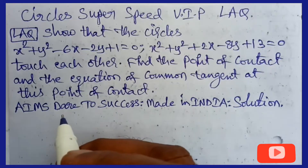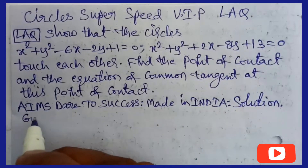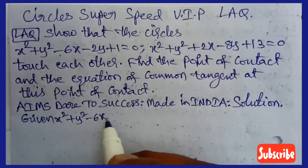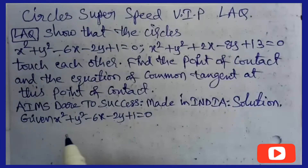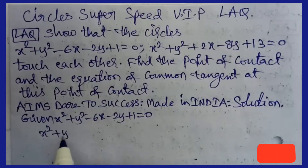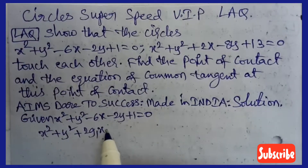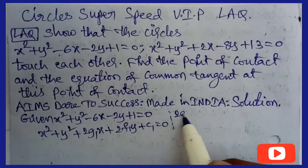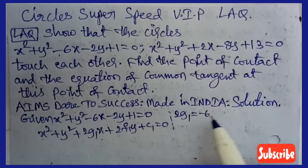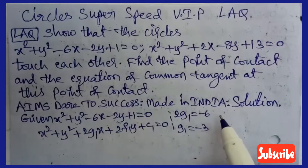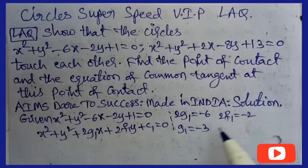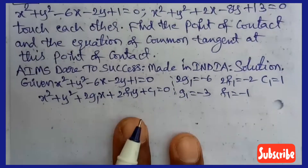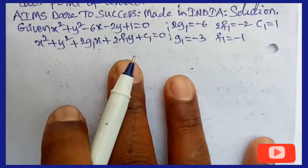AIM's Dare to Success — Made in India solution. The first circle is x² + y² - 6x - 2y + 1 = 0. This is in the form x² + y² + 2g₁x + 2f₁y + c₁ = 0. Comparing x-coefficients: 2g₁ = -6, so g₁ = -3. Comparing y-coefficients: 2f₁ = -2, so f₁ = -1. The constant term c₁ = 1.